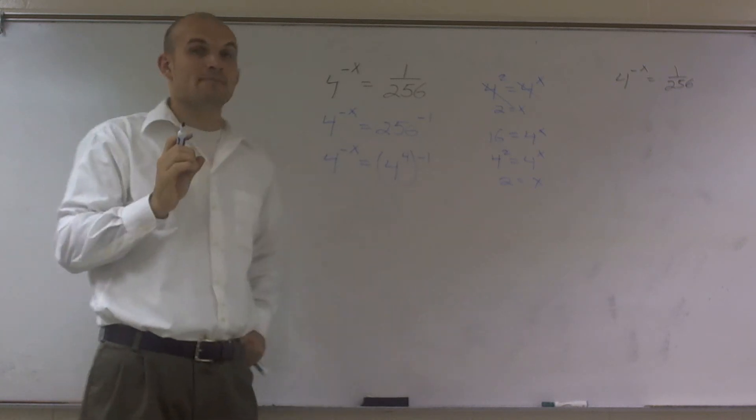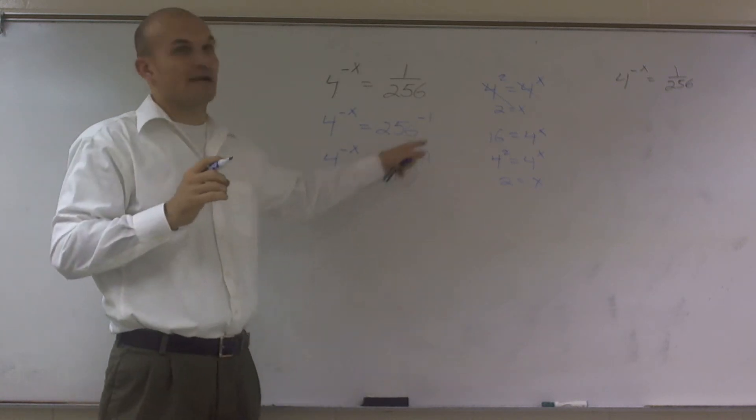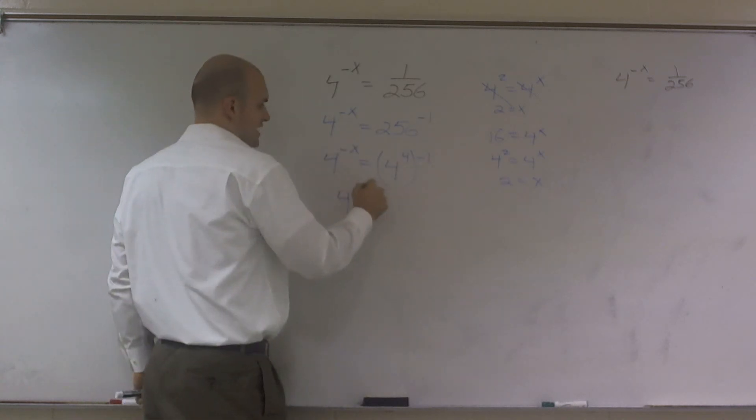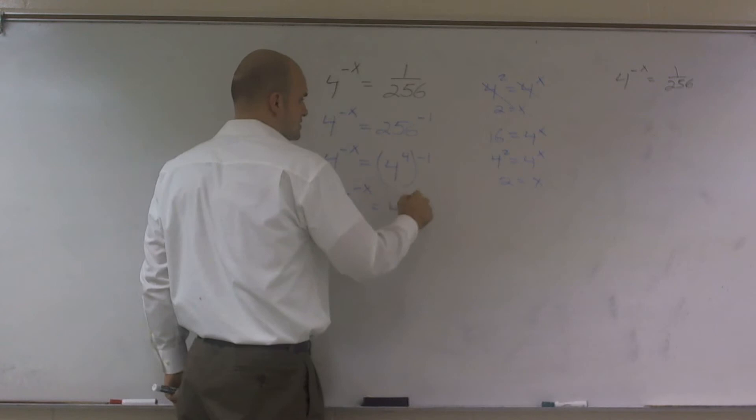Remember that whenever you have an exponent raised to another exponent, you multiply them. So I have 4 to the negative x equals 4 to the negative fourth power.